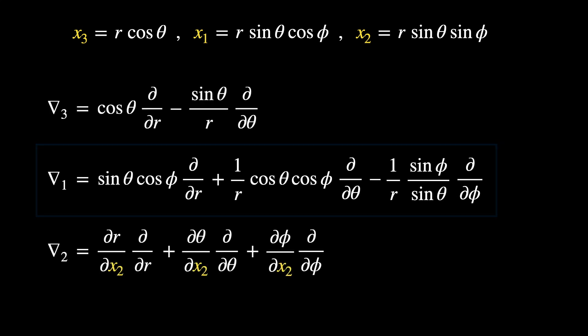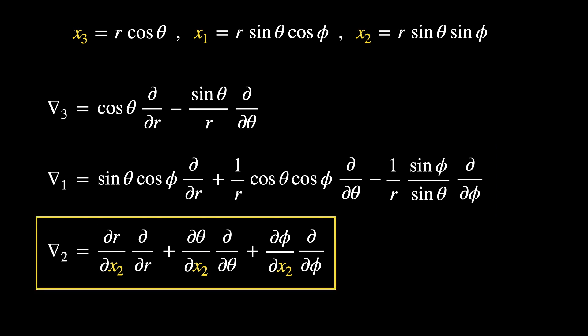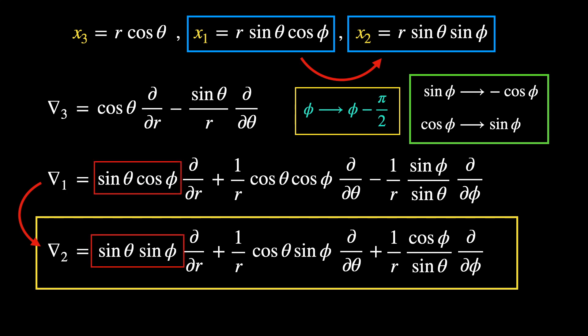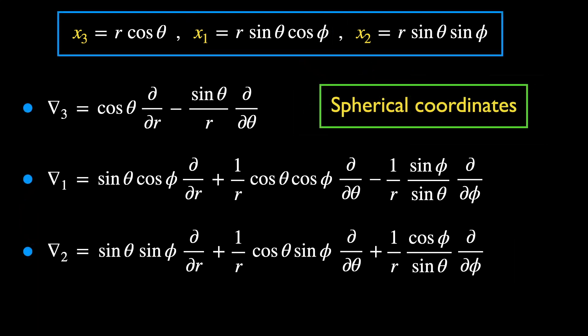Let's work on del-2. However, we need not do any more calculations. We can just infer the result from del-1. Here's how. By observing the relation between the equations in the blue boxes, we notice that x1 changes into x2 if the angle phi is shifted in this way. This shift causes the following changes in these trigonometric functions, making the connection above obvious. In the same way, the derivative by x1 is connected to x2 by the same transformations.